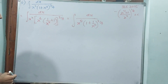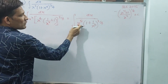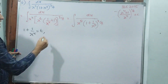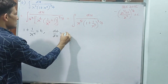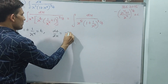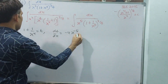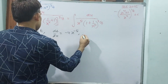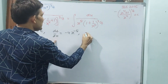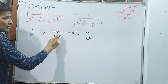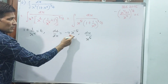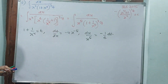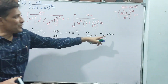I want to take this as t. Why? Because some hint is appearing — 1 by x to the power of 4, or dx by x to the power of 5, that looks like a hint. So 1 plus 1 by x to the power of 4, I am taking as t. dt by dx is equal to — this is 0 — see x to the power of minus 4, so minus 4 into x to the power of minus 4 minus 1. Multiplying dx, dx by x to the power of 5 will be there, which gives minus 1 by 4 dt. So dt by minus 4.